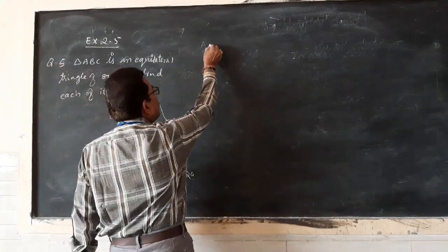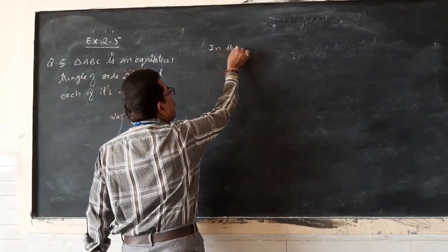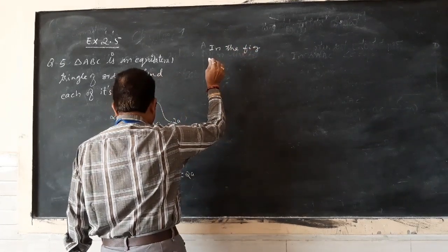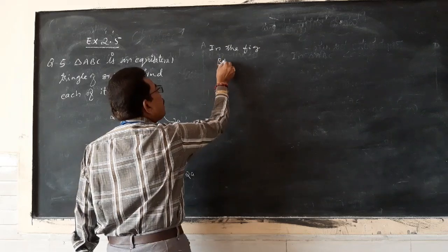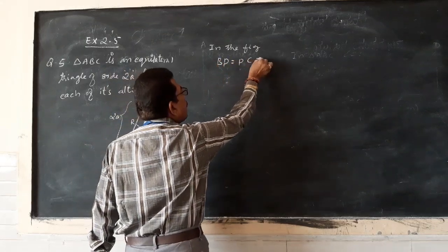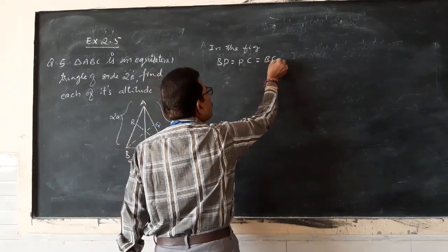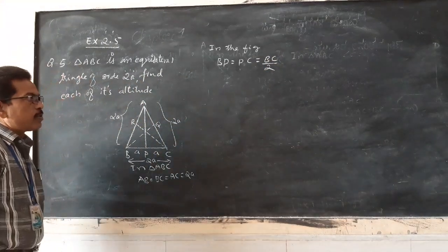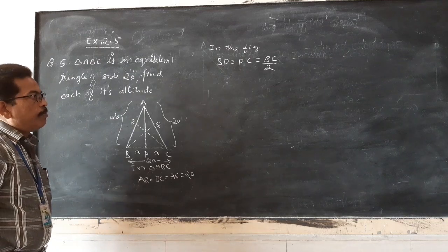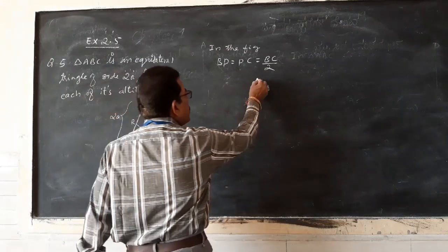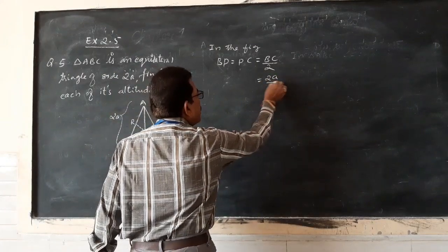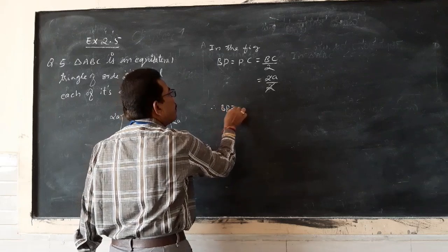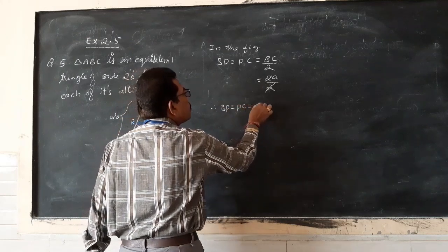In the figure, BP equals BC by 2. That is, BP = 2A divided by 2, which equals A. Therefore, BP = PC = A. The altitude of an equilateral triangle divides the base into two equal parts.